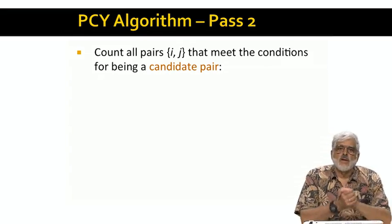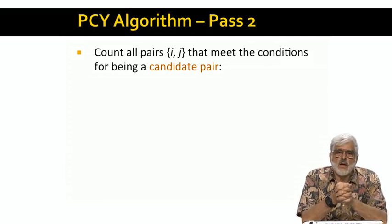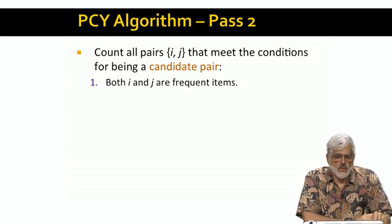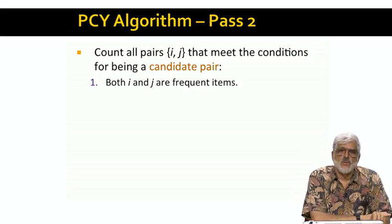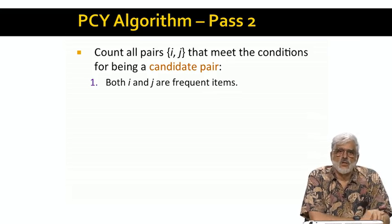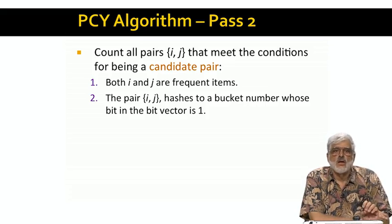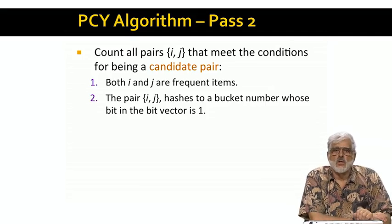Our job on pass two is to count the candidate pairs. In the PCY algorithm, in order to be a candidate pair, i and j must satisfy two different conditions. First, both i and j must have been found frequent on the first pass — for A Priori, this is the only condition. The new condition is that the pair itself must hash to a bucket that was found frequent in the first pass. It is easy to see that if the pair i,j is really frequent, then both conditions will be satisfied. Condition one follows from monotonicity, and condition two is satisfied because the count of a bucket cannot be smaller than any of the individual counts.